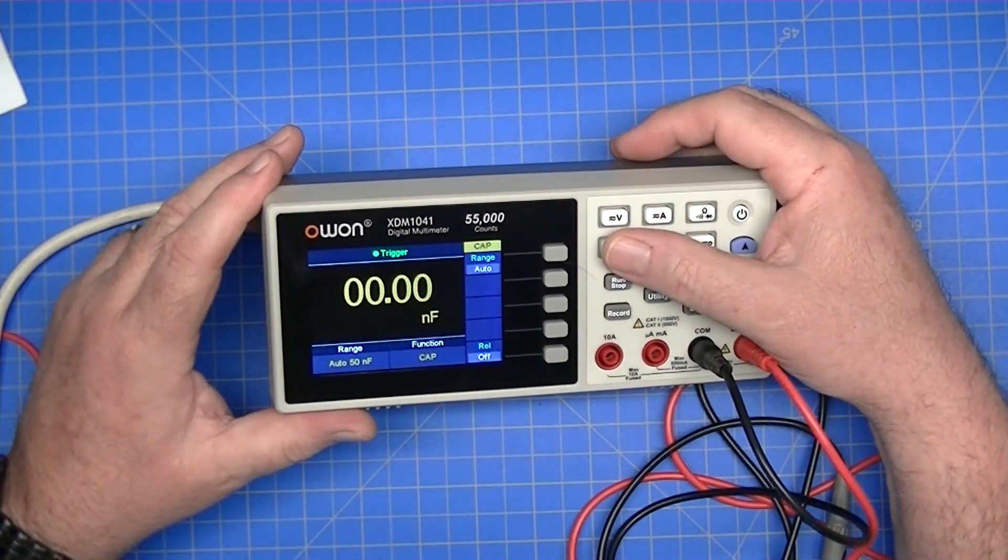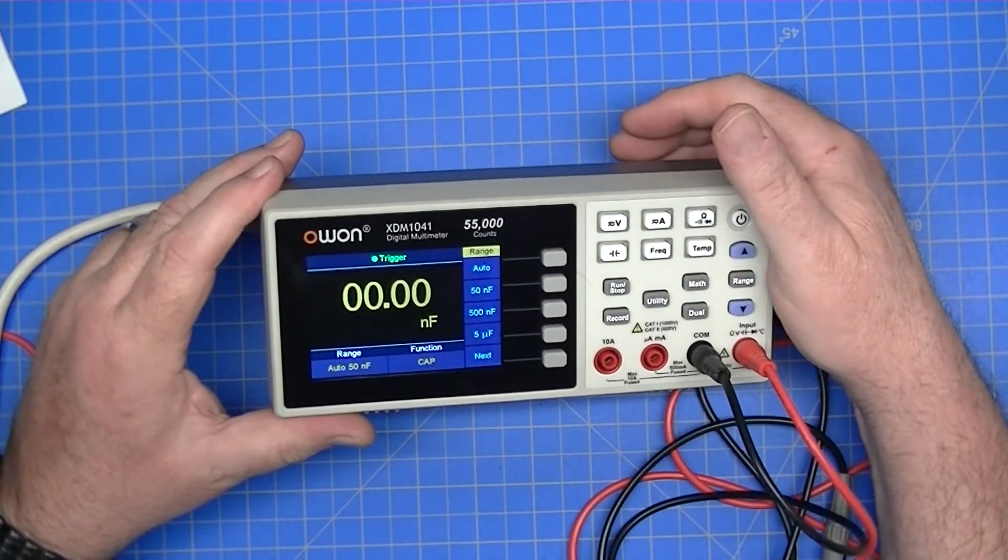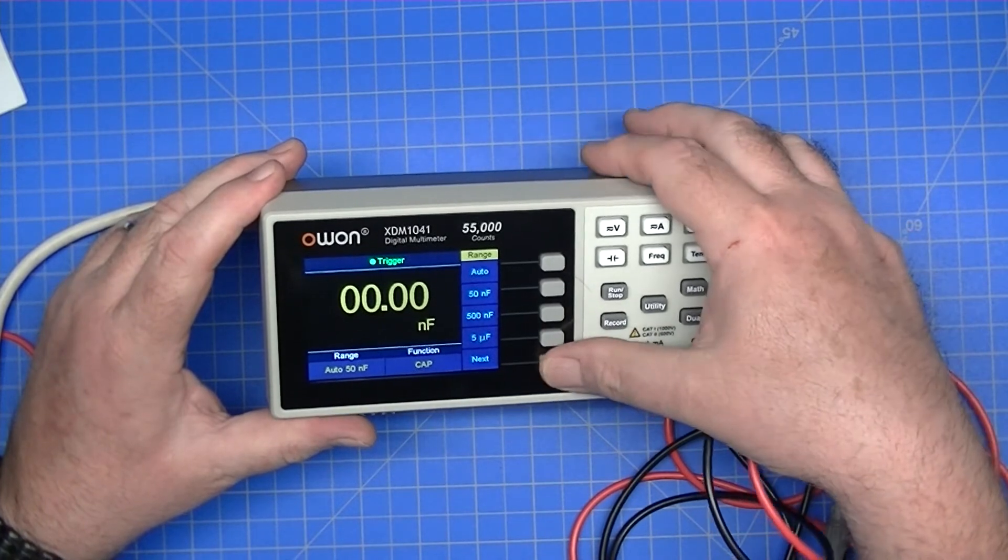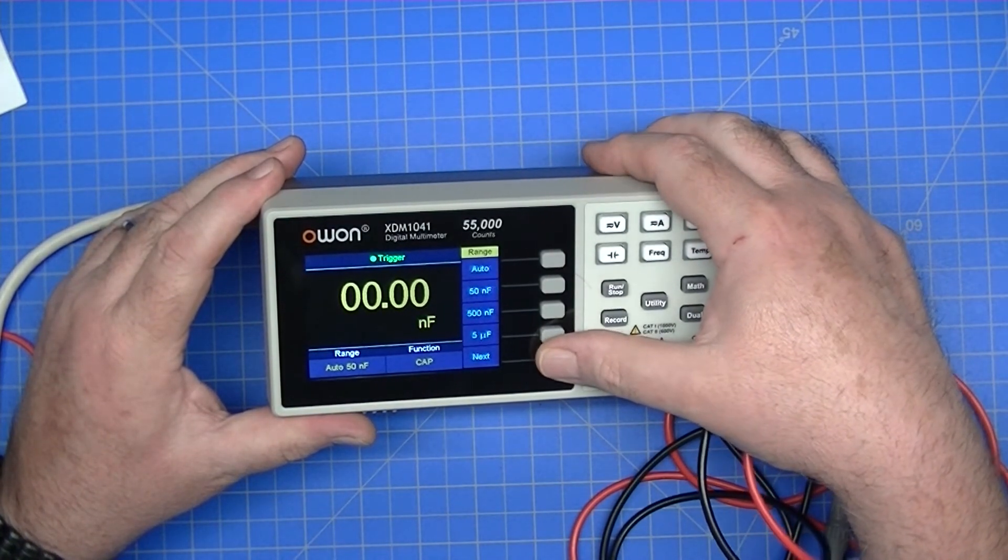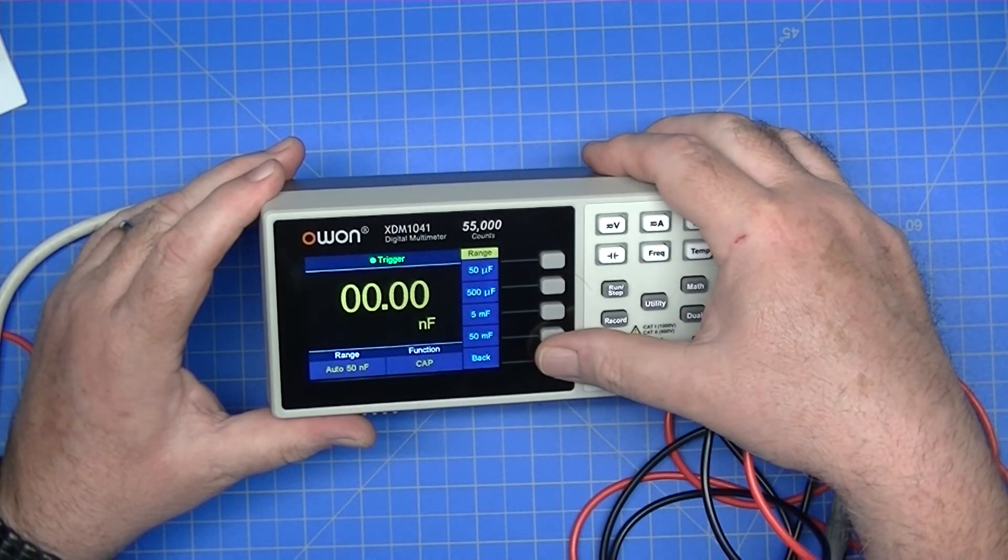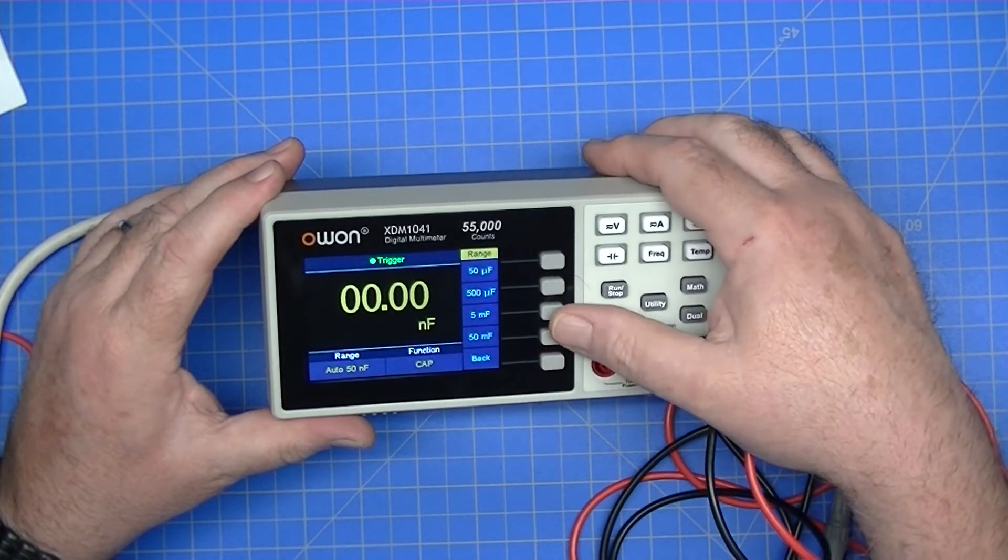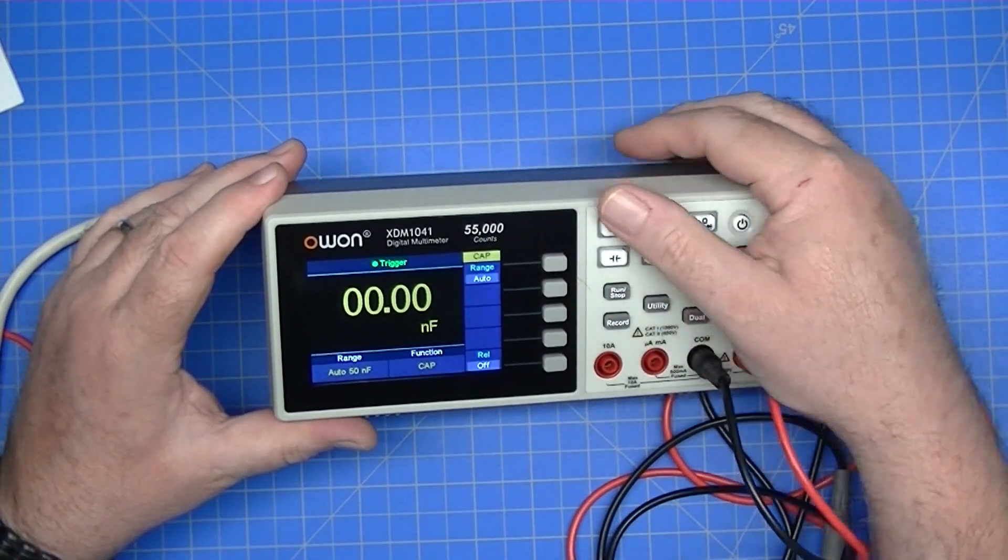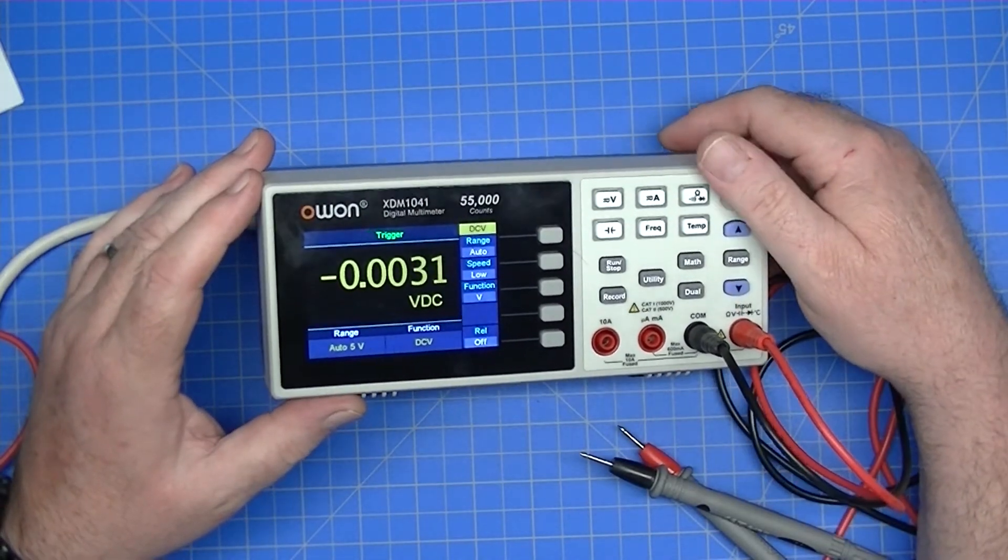And then here's our capacitance. Since it's in the nanofarad range, we can change the range here. I can auto it. I can go to those specific ranges from nanofarads all the way up to millifarads. So that's excellent. You can just obviously leave it in auto range. There we go. Got to actually push it.